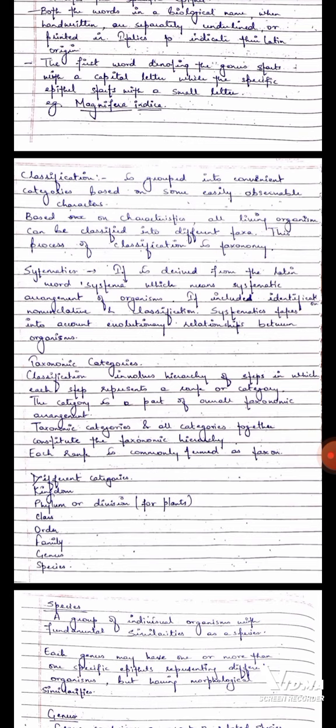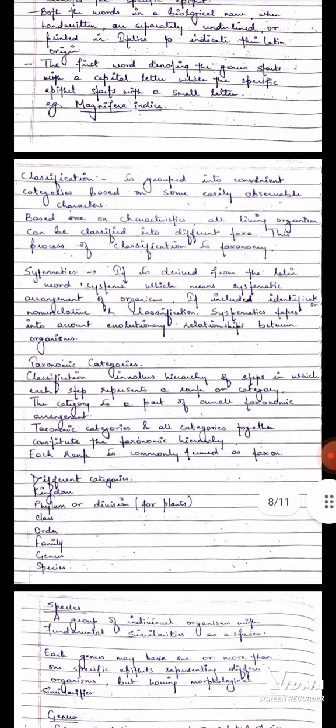Now we will talk about systematics. It is derived from the Latin word systema which means systematic arrangement of organisms. It includes identification, nomenclature, and classification. Systematics takes into account evolutionary relationships between organisms.